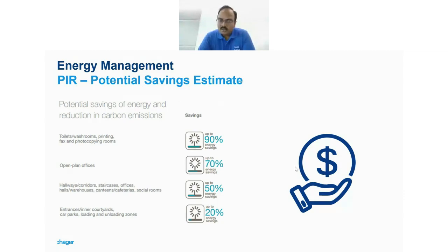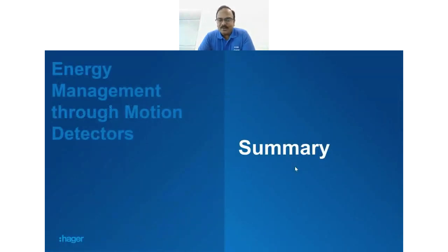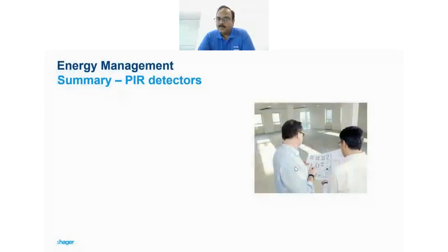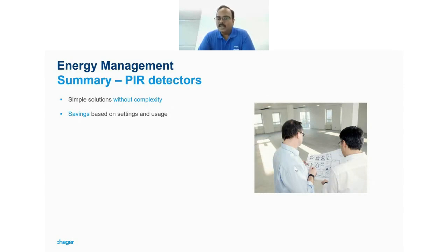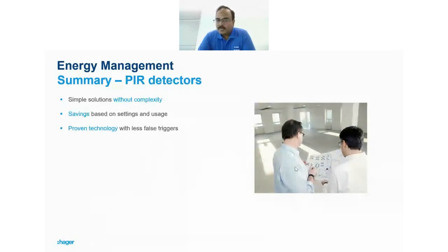To summarize: a PIR motion detector is a very simple solution without complexity but contributes greatly to energy efficiency. Savings depend on settings and usage but are definitively present — it's only a matter of how much. It is a proven technology, increasingly common in buildings, yet many homes and offices still haven't adopted it, so there is still significant potential for uptake.